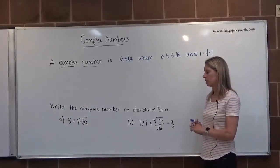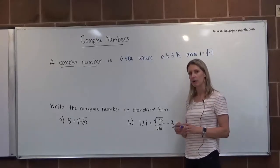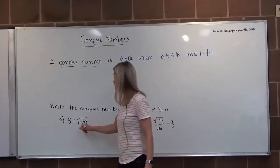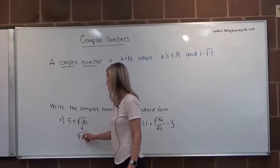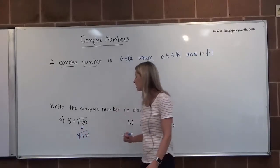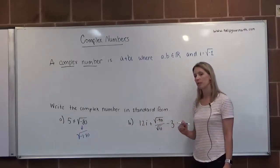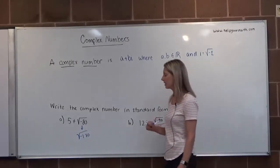The five is done, we don't need to worry about that. The square root of negative 80 we can simplify. So first we rewrite it as the square root of negative one times 80. Then the largest perfect square factor that goes into 80 would be 16.